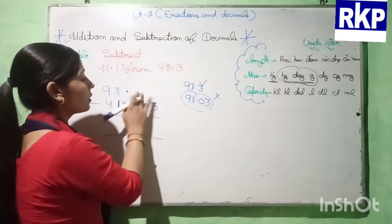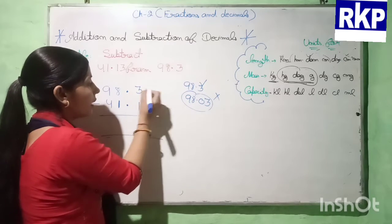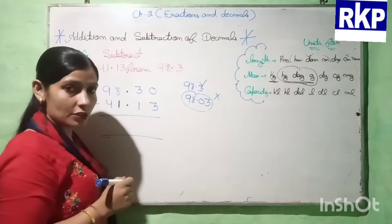So this 3 will come at tenths place and here we can write 0 at hundredths place.